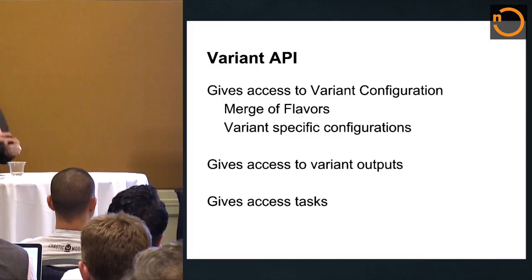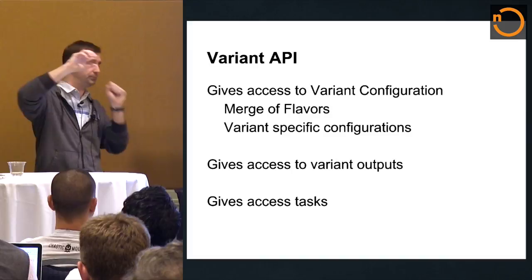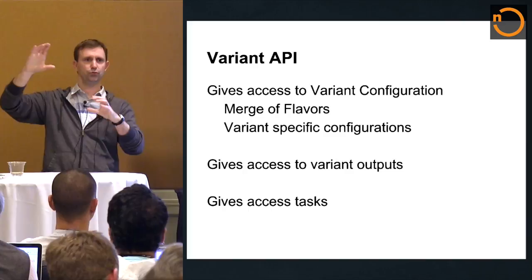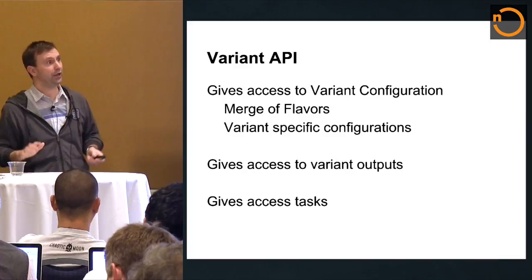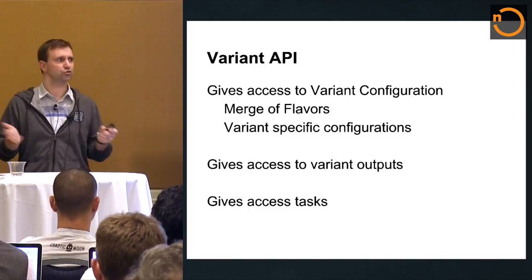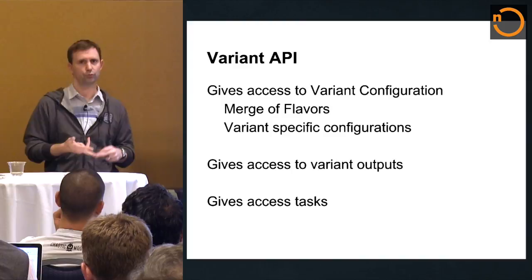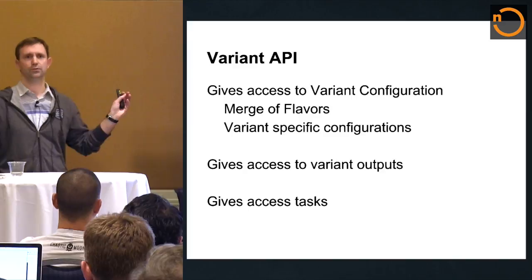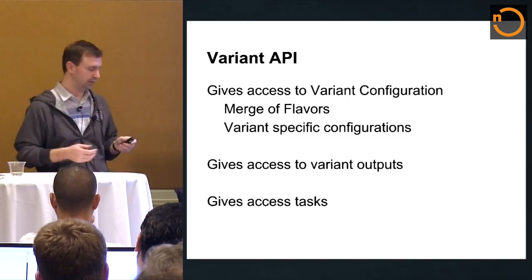We give you the merged flavor object so you can verify it's okay. Long-term, we want you to also be able to modify it — for example, saying for a particular variant I want a different application ID. We're not quite there yet but we want to provide that. We also have variant-specific configuration objects like buildConfigField and resValue that I mentioned earlier. And we get access to all the tasks — for example, you can query the variant to get the DEX task, grab its output, convert it, and give new input to the DEX task. You have a lot of flexibility.